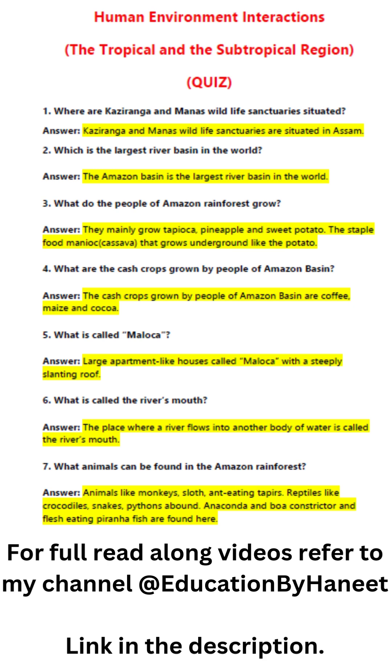Question seven: What animals can be found in the Amazon rainforest? Animals like monkeys, sloths, anteaters, tapirs, and reptiles like crocodiles and snakes can be found in the Amazon rainforest.